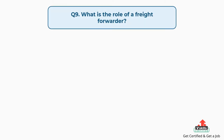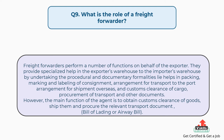Question number nine: what is the role of a freight forwarder? The answer is: freight forwarders perform a number of functions on behalf of the exporter. They provide specialized help from the exporter's warehouse to the importer's warehouse by undertaking procedural and documentary formalities, helping in packing, marking and labeling of consignment, arrangement for transport to the port, arrangement for shipment overseas, customs clearance of cargo, and procurement of transport and other documents. The main function of the agent is to obtain customs clearance of goods, ship them, and procure the relevant transport document — bill of lading or airway bill.